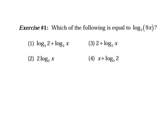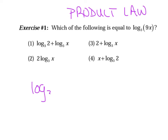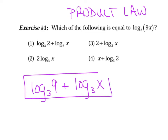As we get ready to try some live examples, one habit we're going to develop is naming the properties or laws we used — whether it's the product, quotient, or power law. For this first example, ask yourself what operation is being used between the nine and the x. Because the nine is multiplying the x, we're going to use our product law and expand it as log base three of nine plus log base three of x.